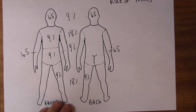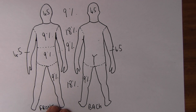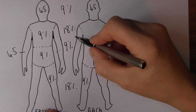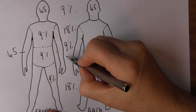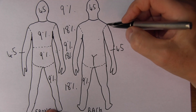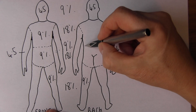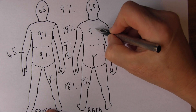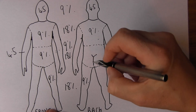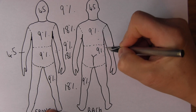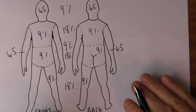And the back includes the buttocks — again 18% in total for the back, including the buttocks. So the thoracic area is 9%, and the loin area and the buttocks are 9%.